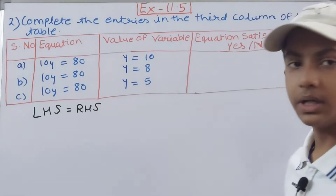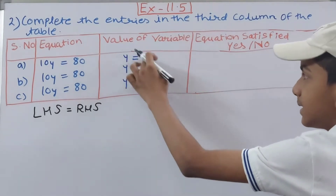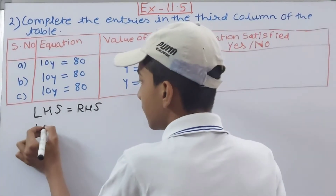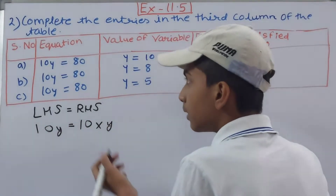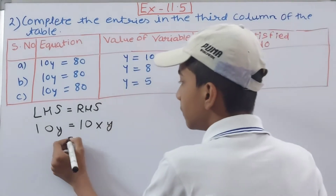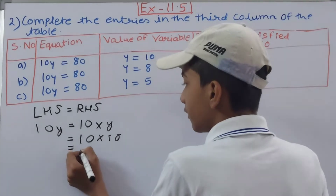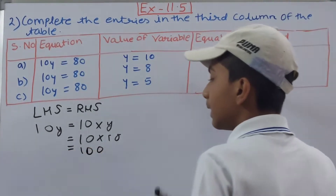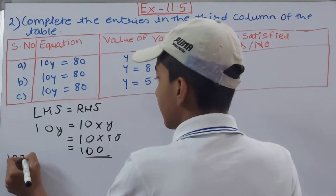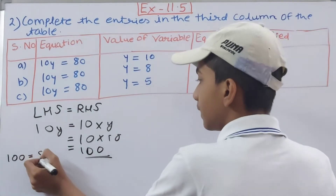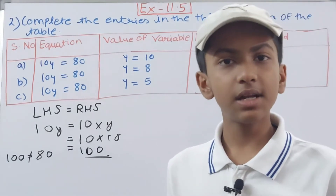First equation: 10y = 80, with y = 10. Now 10y means 10 × y. If y is 10, then 10 × 10 = 100. The LHS is 100, but the RHS is 80. They are not equal, so the equation is not satisfied — write No.